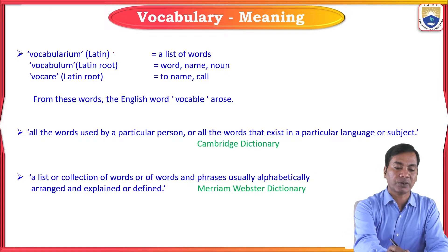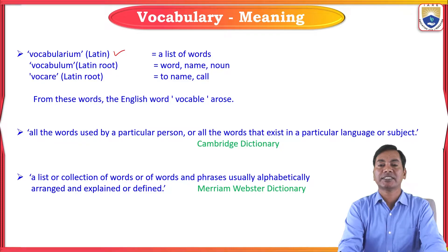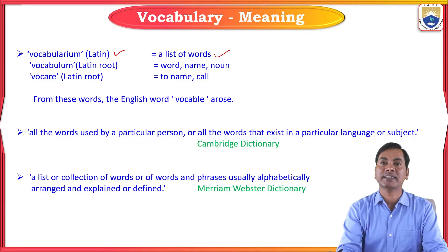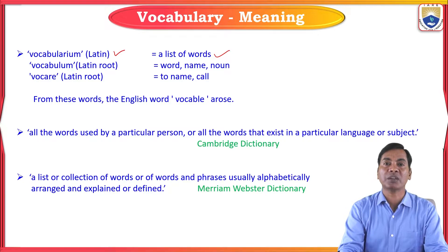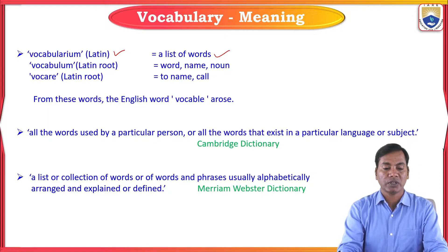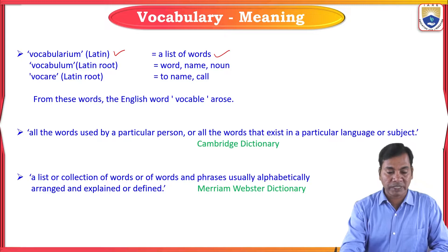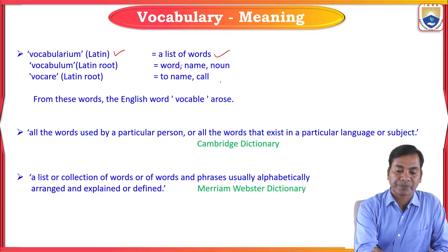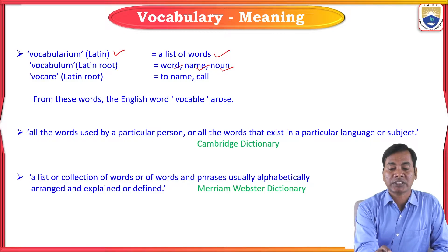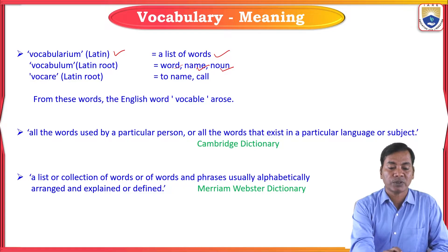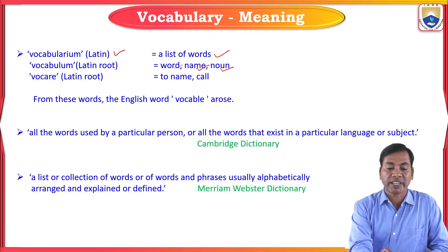The first Latin root is vocabularium, which means 'list of words.' The second Latin root is vocabulum, which means 'words, name, or noun.' The third Latin root is vocab, which in Latin means 'to name or call.' By combining all these three, we have got the English word vocabulary.